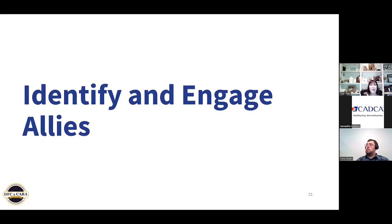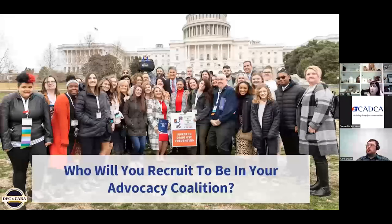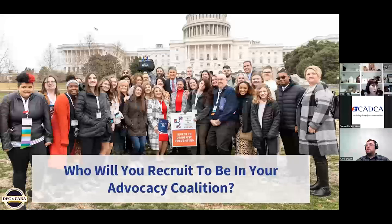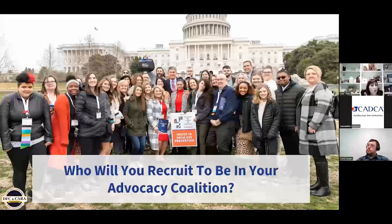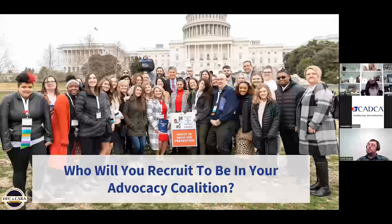The next thing we need to do is identify and engage who our allies are going to be — who are the people in the community that agree that underage drinking is a really big problem and that we really need to do more about it both policy-wise and funding-wise. You need to figure out who you're going to recruit to be in your advocacy coalition. This is a little bit different than the 12 sectors in your coalition. There are other people who maybe aren't already in your coalition who would be really interested in whatever issue you're pushing, and you need to figure out how you're going to recruit additional people.